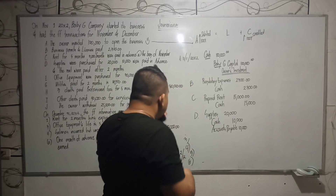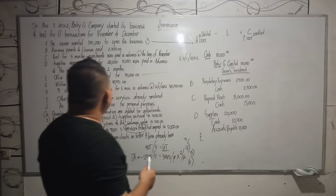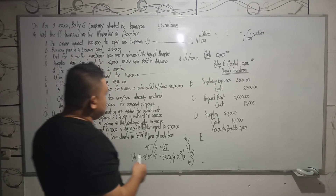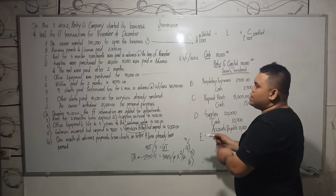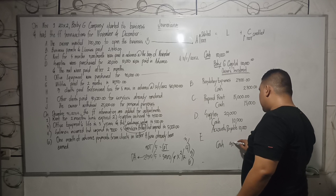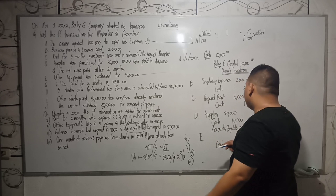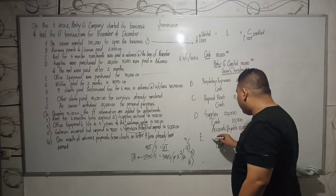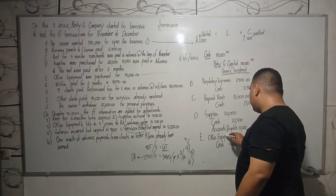Let's have letter E. Office equipment was purchased for $30,000. Since you purchased it for cash — and it is silent, meaning cash was paid — you credit cash $30,000. Since the office equipment is to be used for more than one year, it is considered a non-current asset. So you debit office equipment $30,000.